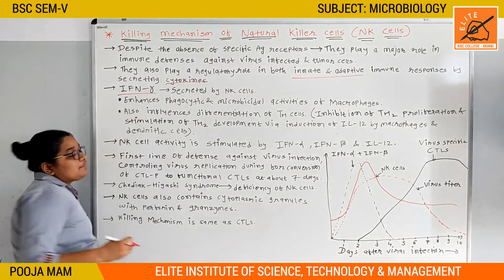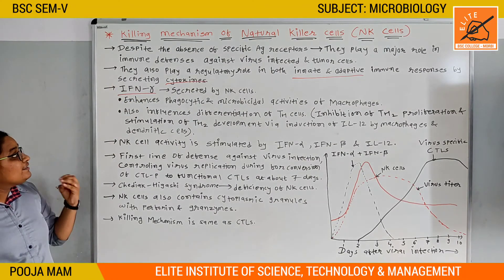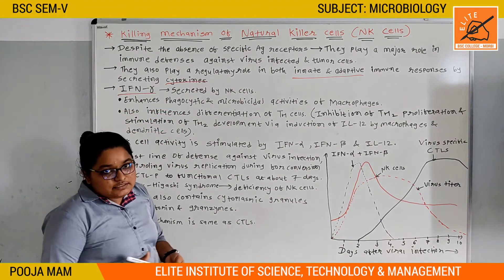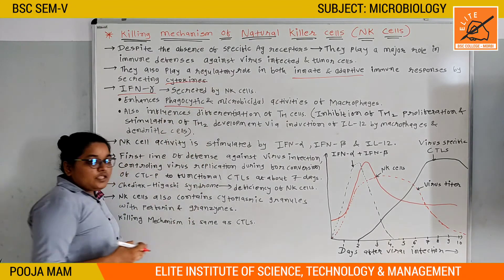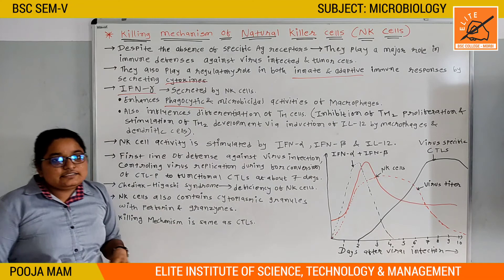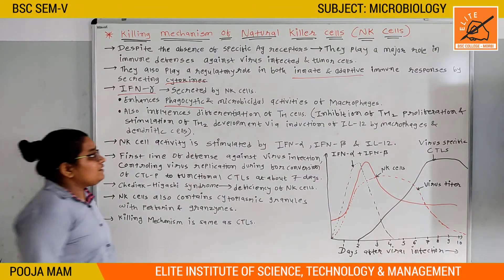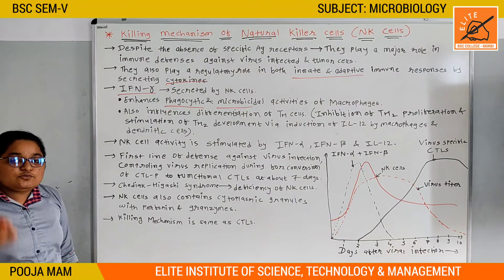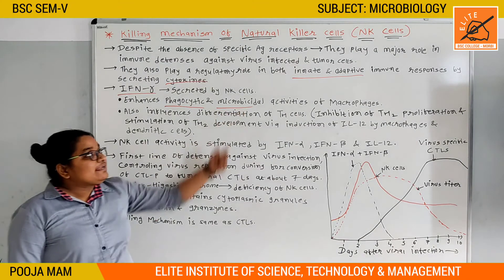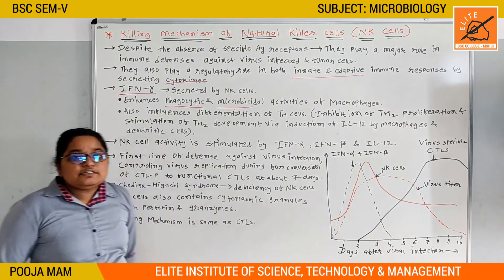The major cytokine secreted by natural killer cells is interferon gamma. Interferon gamma functionally enhances the phagocytic and microbicidal activity of macrophages. So overall, interferon gamma enhances the activity of macrophages, improving their ability to destroy microorganisms.